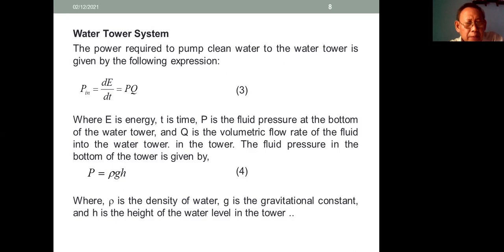The fluid pressure at the bottom of the tower is given by P = ρgh, where ρ is the density of water, G is the gravitational constant, and H is the height of the water level in the tower.